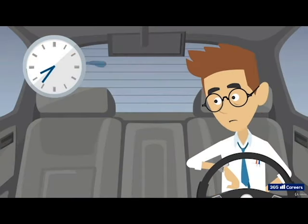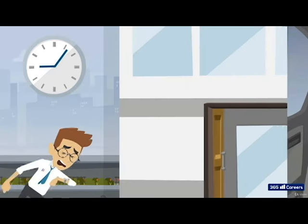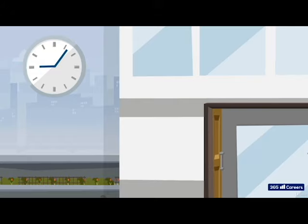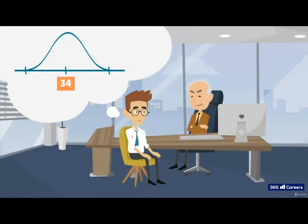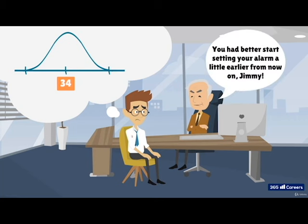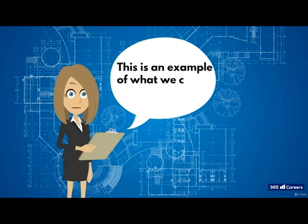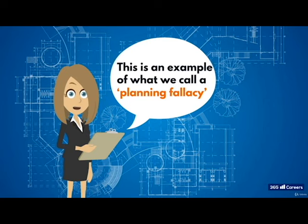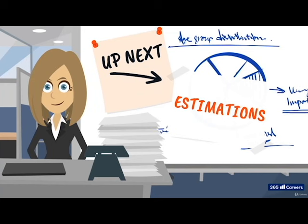Jimmy is not quite the punctual employee he thought he was. In fact, he made it to the office in less than 30 minutes only once. The data showed that on average, Jimmy takes 34 minutes to reach the office, over 10% his estimate. You had better start setting your alarm a little earlier from now on, Jimmy. Now, this is an example of what we call planning fallacy, and we are all susceptible to it. So next lesson, we'll discuss what exactly the planning fallacy is, why it occurs, and what good project managers do to counteract it.